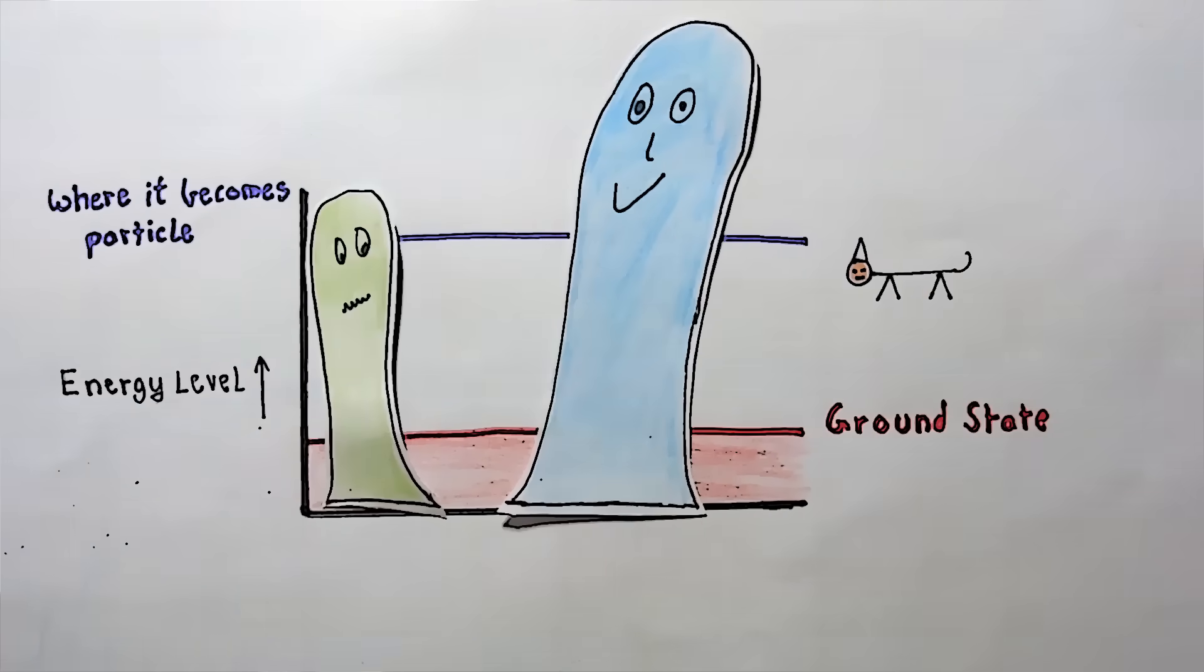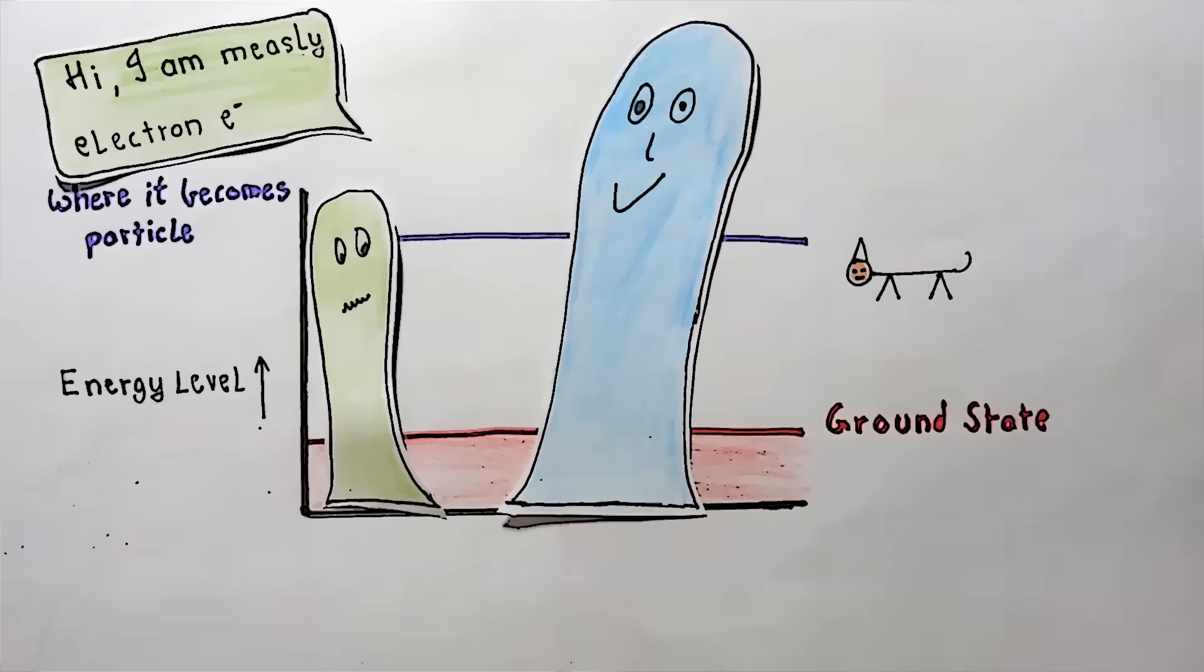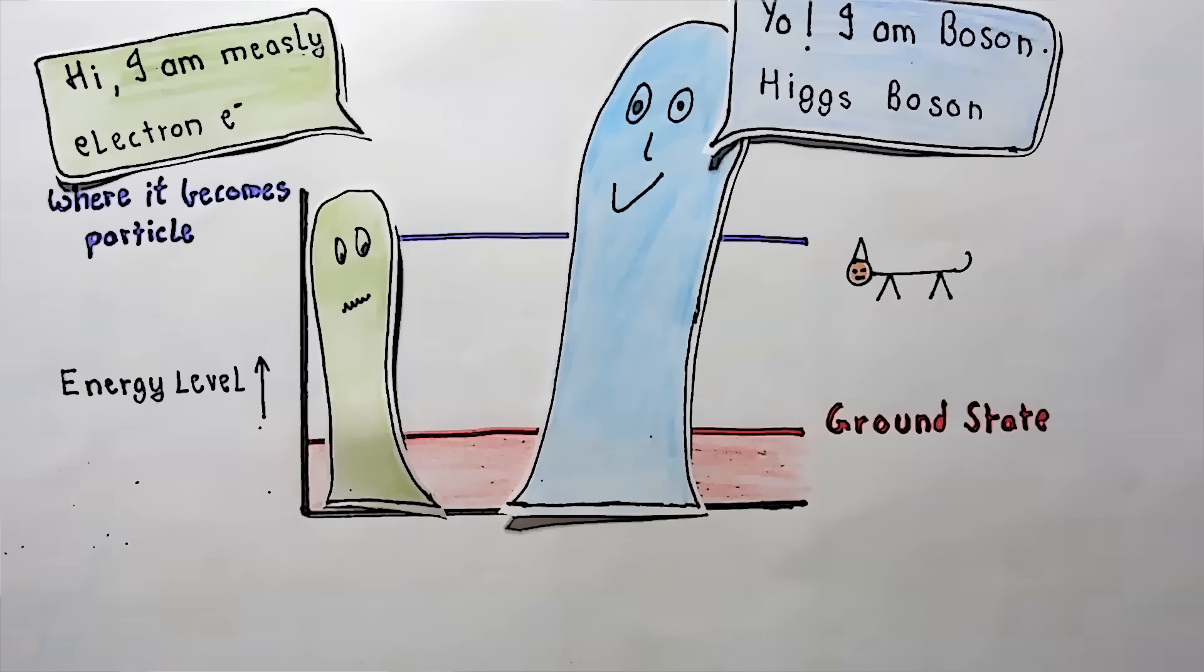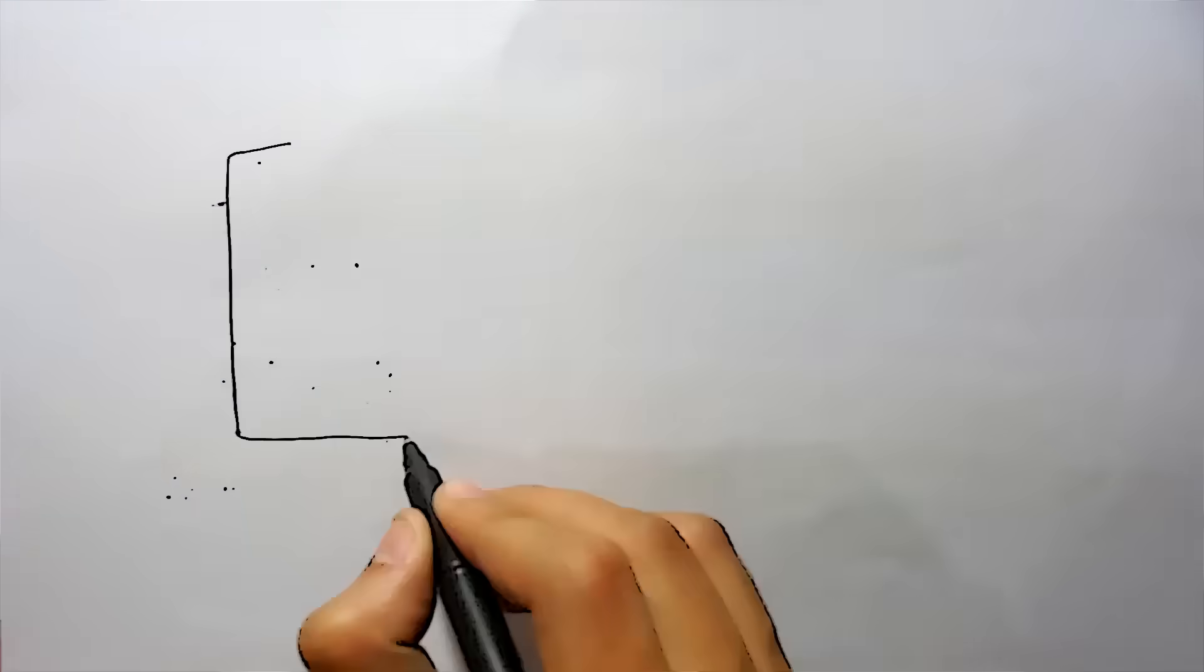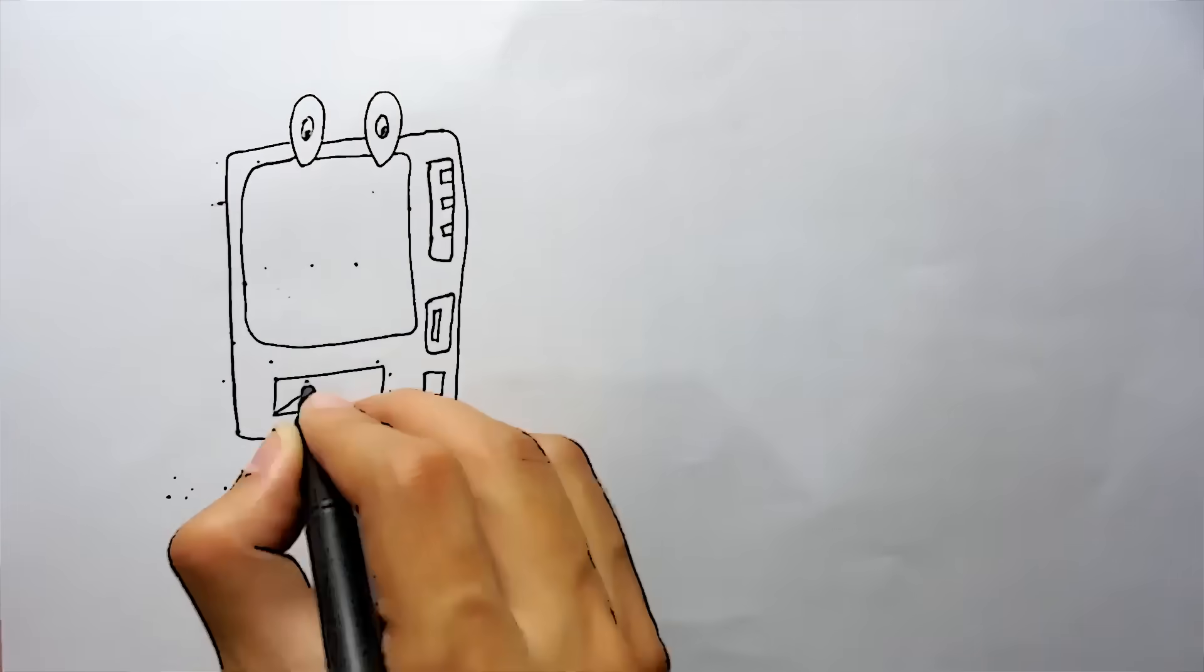For example, a Higgs boson is much more massive than an electron, so electrons are very easy to create, but Higgs bosons not so much. Here's an easier way to think of this.